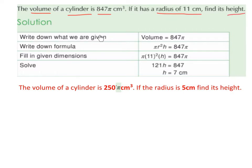We write down what we're given, the volume equals 847π. Then we write down the formula. The formula for the volume of a cylinder is πr²h. This is given to us in the formula book, so πr²h equals 847π.